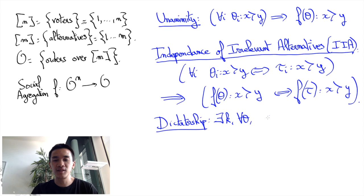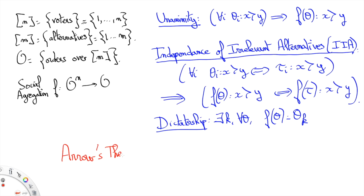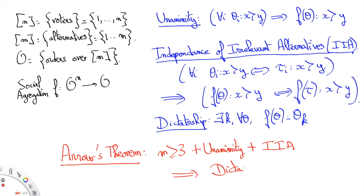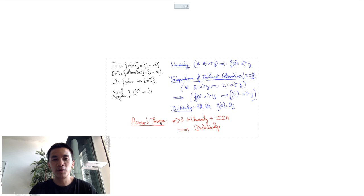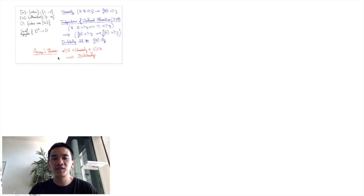Finally, F is dictatorial if there is a dictator K in N such that for any preference profile theta in O^N, F of theta is equal to theta_K. Arrow's impossibility theorem states that for |M| ≥ 3, unanimous plus IIA implies dictatorial.